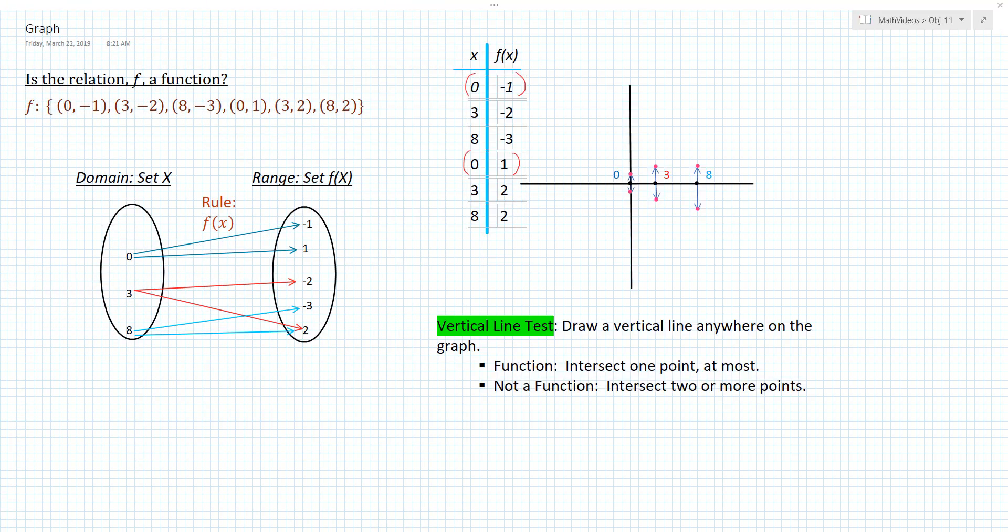Now let's go ahead and take any one of the representations we've seen thus far for the same relation and apply that to a graph. So I'm going to go ahead and look at our table of values, just because typically we have a table of values and then we graph.